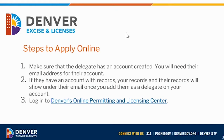To apply a delegate to your records, you want to make sure that the delegate has an account created in Denver's online permitting and licensing center. They'll need an email and password where they've already created an account, and you'll need that email address they used. Also note that if they already have an account with records, your records and their records will all show under their email once you add them as a delegate. So they need to make sure they don't get confused about whose record is whose.